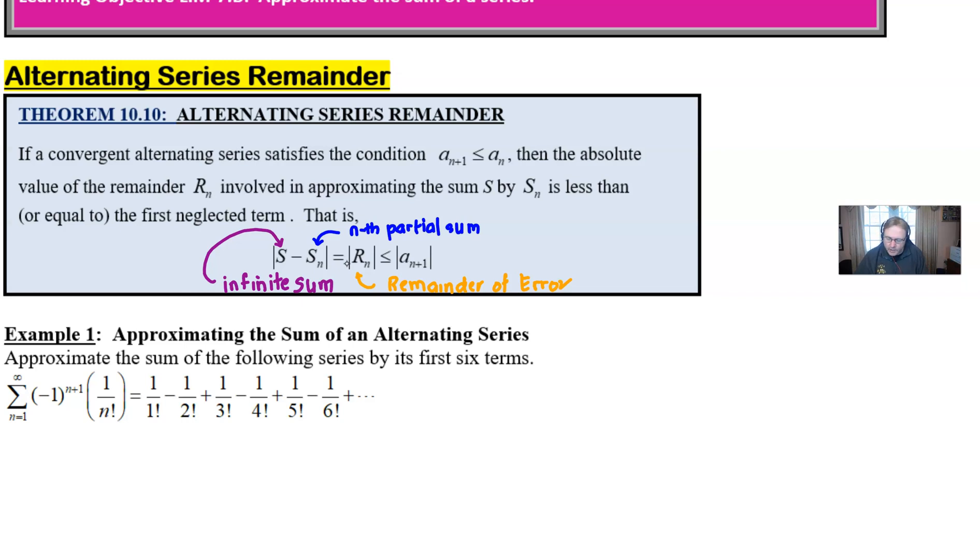So that is this alternating series remainder that we actually are going to use a little bit more in the next video with our last example, example two parts a and b. Now we'll talk about it though here a little bit with our example one. It says example one says just simply approximate the sum of the following series by its first six terms. And notice that this is an alternating series and it's not the harmonic series because the factorial sort of blows that out of the water.